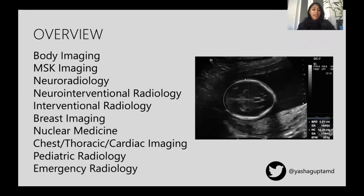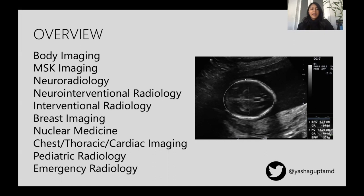So there are really 10 subspecialties I'm going to talk about today: body (also called abdominal), MSK which is musculoskeletal, neuroradiology, neurointerventional, interventional, breast imaging, nuclear medicine, and then the umbrella of chest — which can include thoracic, cardiothoracic, or cardiovascular — and then pediatric radiology and emergency radiology. Just remember that there is overlap between all of these; there is no one study that is only read by one type of radiologist. Everything is very fluid, and depending where you practice, you might be reading one or more of these things. Radiology is very fluid.